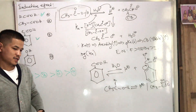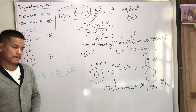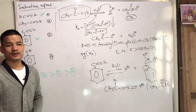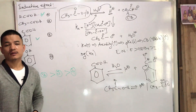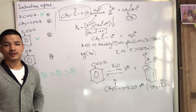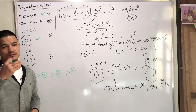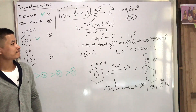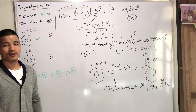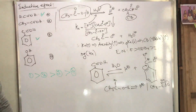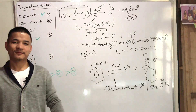Next topic: resonance and mesomeric effect. With the mesomeric effect, we will be able to use the resonance. We will have to use the theory to explain and avoid issues using the theory of resonance.